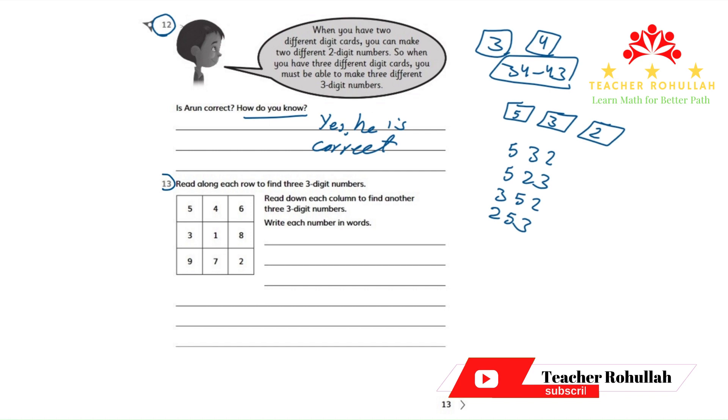In question number 13, it says, read along each row to find three-digit numbers. Read down each column to find another three-digit number. Write each number in words.